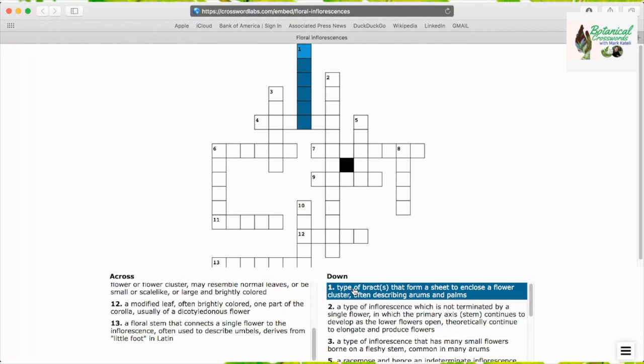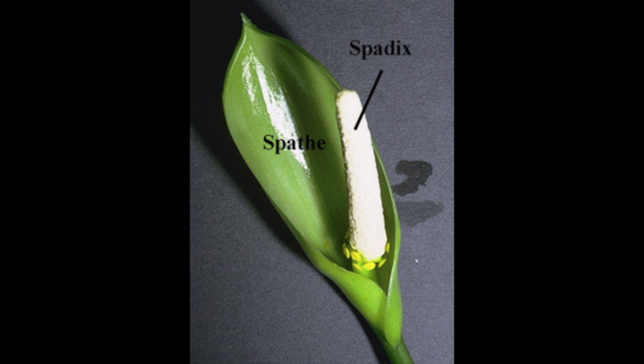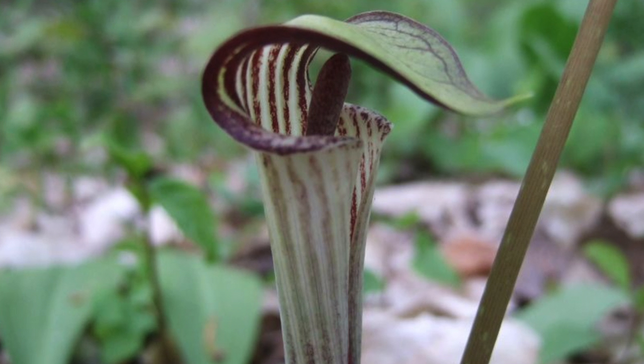The first answer is spathe. It's a type of bract that forms a sheath to enclose a flower cluster, often describing arums and palms. A good example is the native jack-in-the-pulpit plant, Arisaema triphyllum, which is found in the next picture.